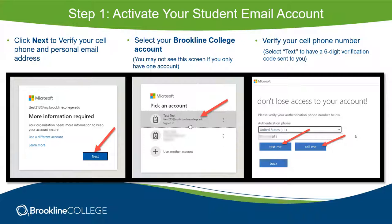Next, click verify to verify your cell phone and personal email address. Select your Brookline College account and verify your cell phone number — put in your number and click 'text me' or 'call me.' Please use your phone that you have access to every day. Don't use your mom's phone or a neighbor's phone — use your phone, because you're going to need this all the time to be able to log in.